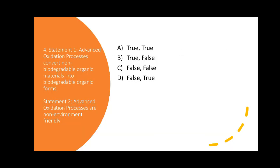Next question: two statements are given about advanced oxidation process. Statement 1 — advanced oxidation process converts non-biodegradable organic materials into biodegradable organic forms. Statement 2 — advanced oxidation processes are non-environmentally friendly. Both statements are contradictory, so one must be true and the other false. The correct answer is option B: Statement 1 is true, and therefore Statement 2 is automatically false, because if AOP converts non-biodegradable to biodegradable, it is clearly an environmentally friendly process.